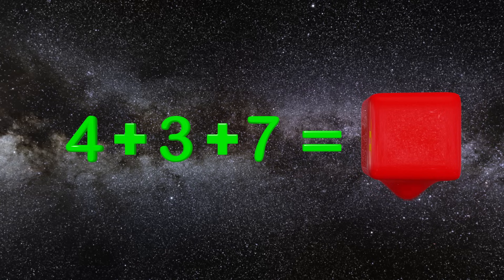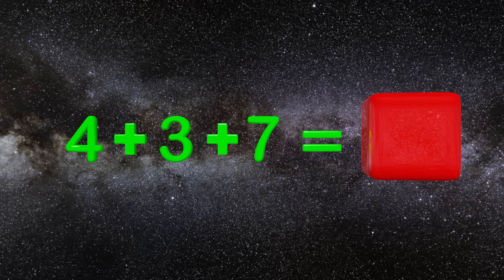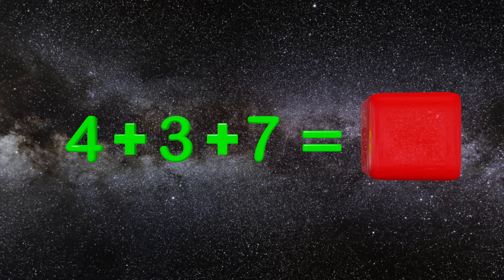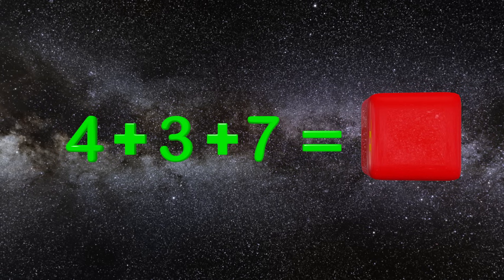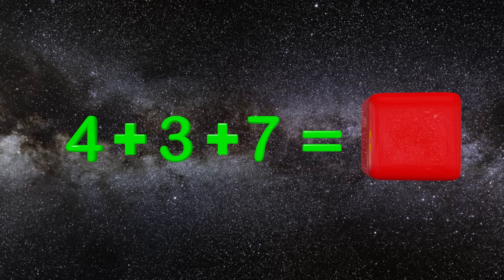Here is an addition problem and the answer is trapped. The only way to save the number is to answer the question in a different way than we normally do. Here we have 4 plus 3 plus 7 equals the trapped number that we do not know yet.